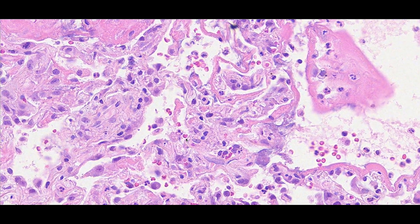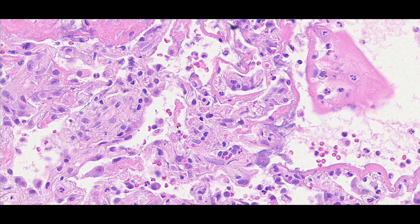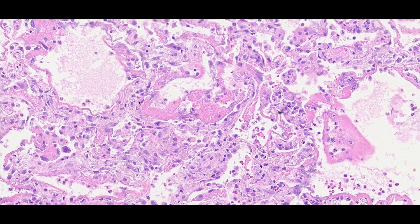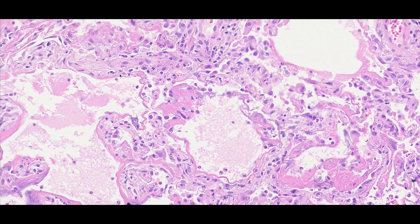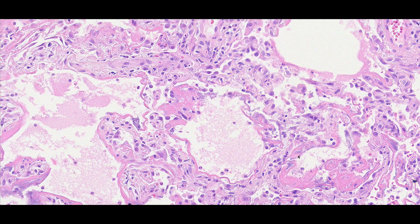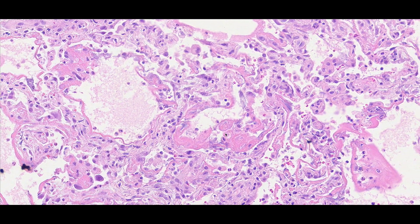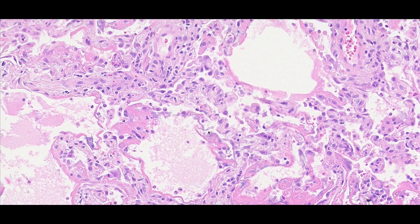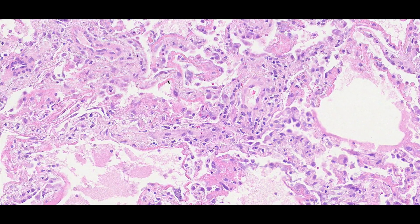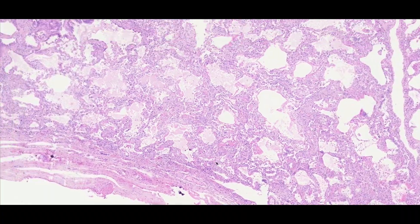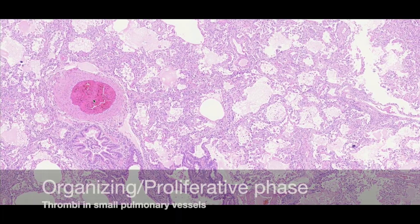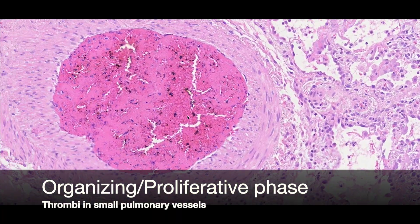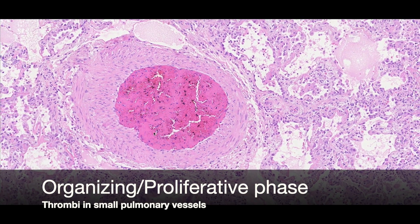As we get into the organizing phase, the hyaline membranes start to resolve. If you get a biopsy at this stage, they may only be focally present and you really have to hunt for them to make the diagnosis. As the lung heals, it will continuously evolve and we'll start to see some areas of squamous metaplasia. This case also has another finding — organizing fibrinous thrombi within a vessel — which can be seen in the later stages of diffuse alveolar damage.